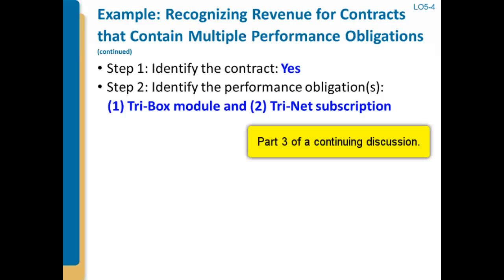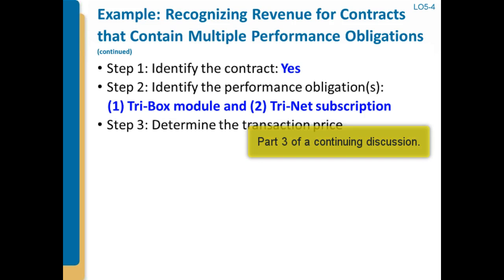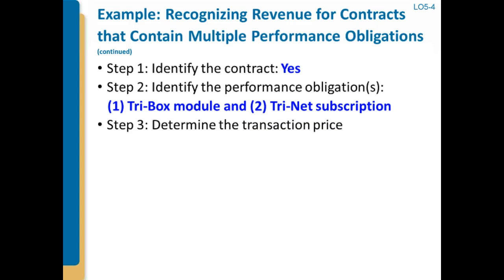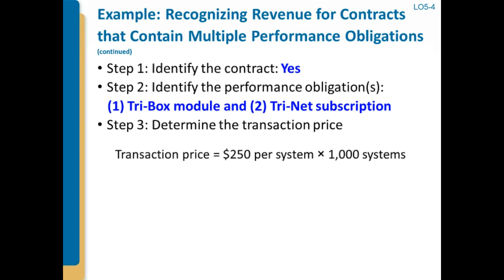Then we have step three, and in step three, what are we going to do? We're going to determine the transaction price. Step three is blissfully simple here. We've got $250 per system, 1,000 systems, so we've got $250,000.